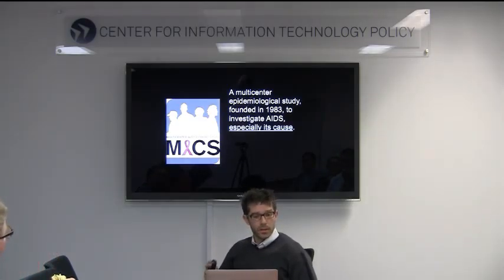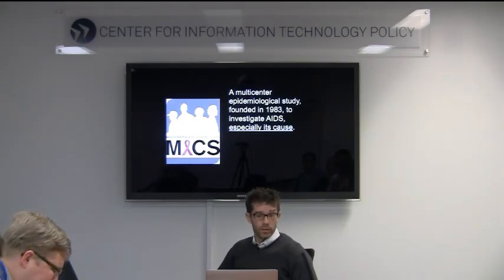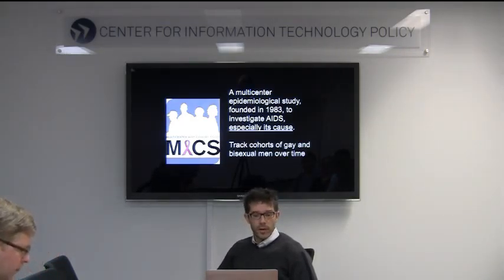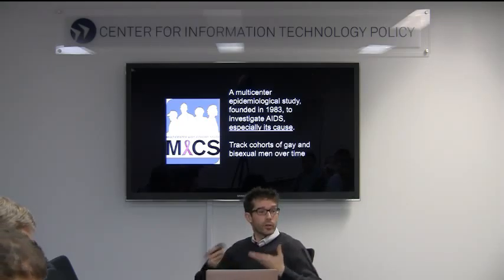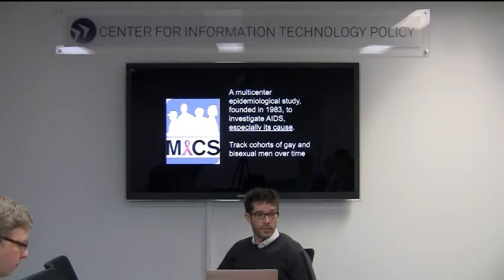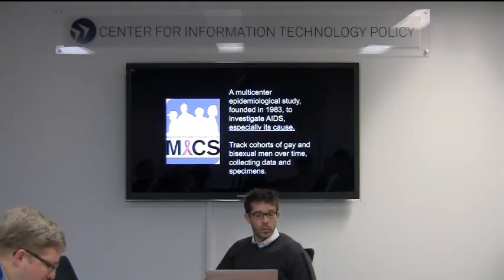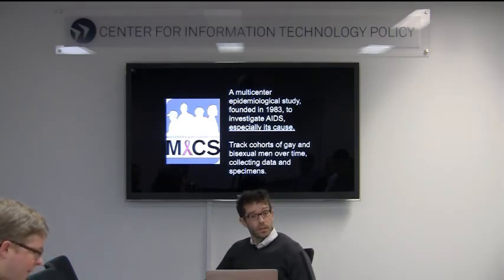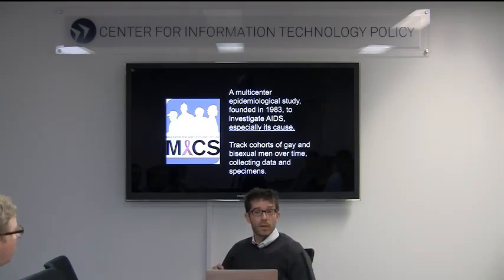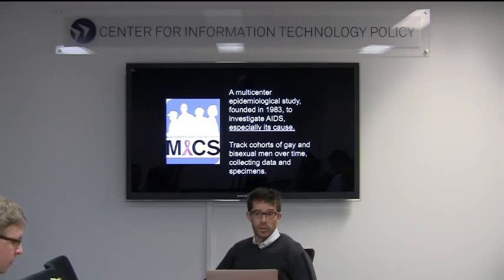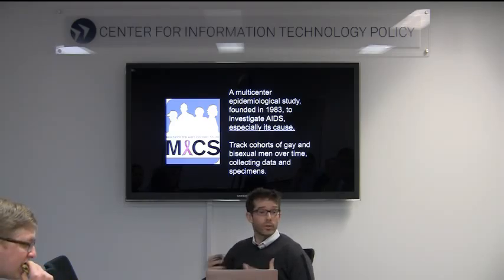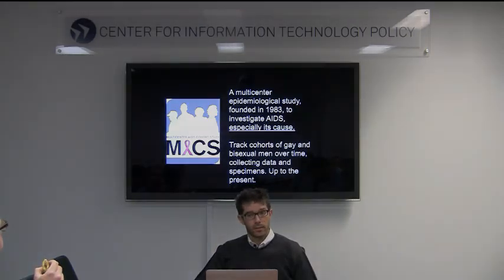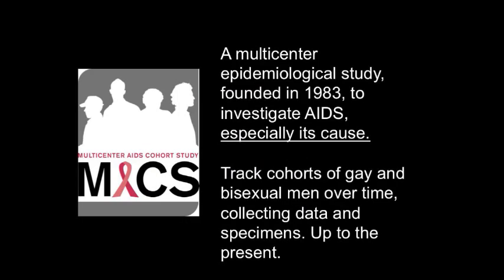The way they investigate is by tracking cohorts of gay and bisexual men over time. 5,000 men were recruited in 1983, and they've tracked the health and activities of these men for the 30 years thereafter, occasionally recruiting additional cohorts. They collect data and specimens: every six months these men come into the clinics, fill in questionnaires, and donate blood and specimens. For those who've been doing it the whole time, that's over 60 visits. And it continues in the present — it's not just a historical artifact.